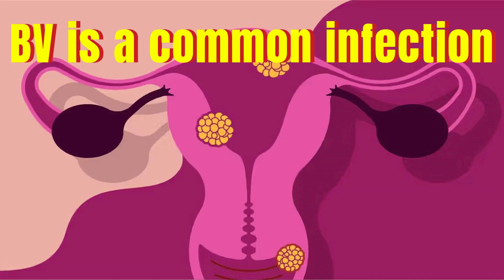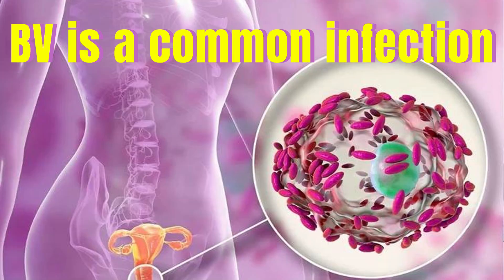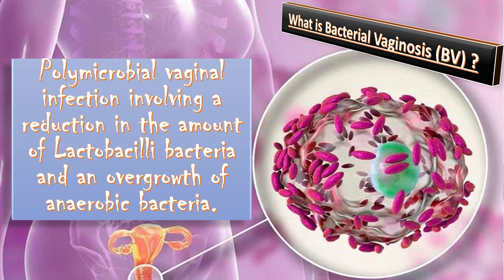Bacterial vaginosis is a common infection of the genital tract. It is a polymicrobial vaginal infection involving reduction in the amount of lactobacilli bacteria and an overgrowth of anaerobic bacteria.